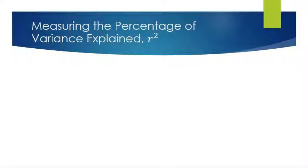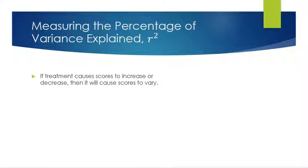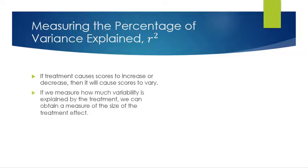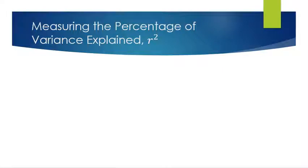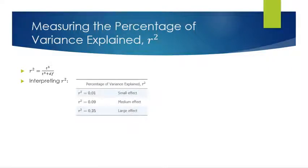Now we're going to talk about r squared, a different measure of effect size — measuring the percentage of variance explained by the treatment. If a treatment causes scores to increase or decrease, it will also cause scores to vary. The r squared equation is: r squared equals t squared over (t squared plus df), where t is your calculated t. When interpreting r squared: 0.01 is a small effect, 0.09 is a medium effect, and 0.25 is a large effect.